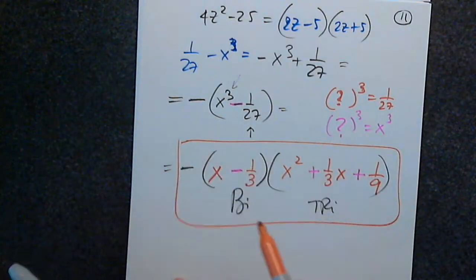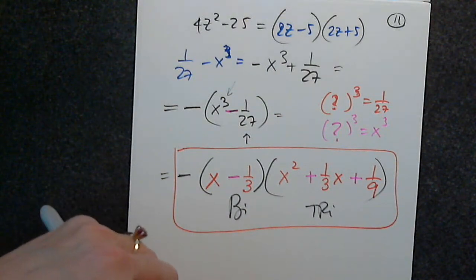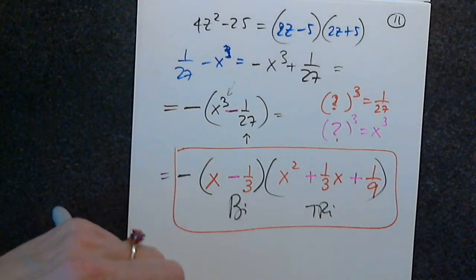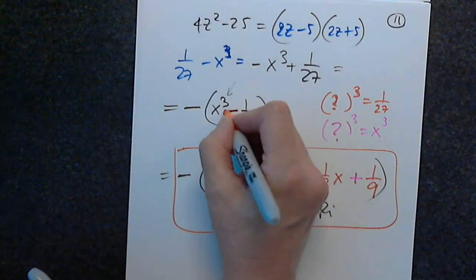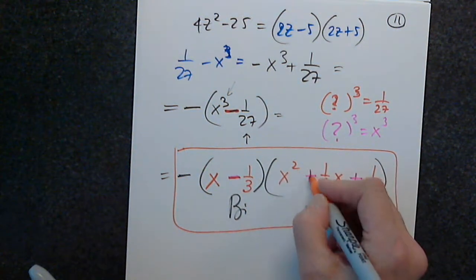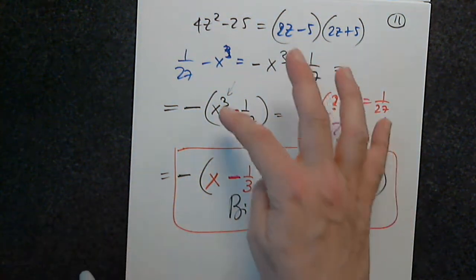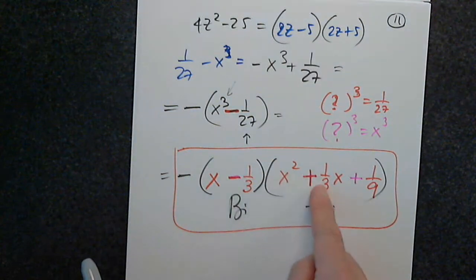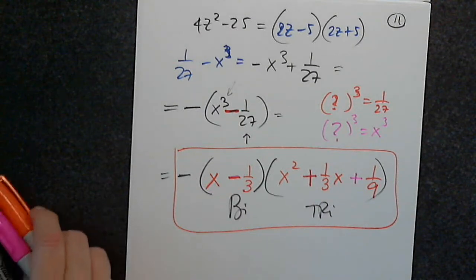The only tricky part is the sign of the middle term. The binomial has the same sign as the original, and the trinomial has the opposite sign in the middle. So the sequence is minus, minus, plus — or plus, plus, minus. Put the signs first so you don't mess it up.